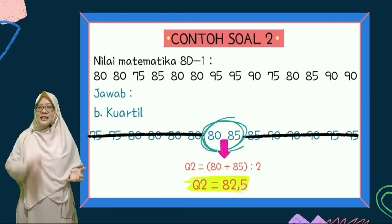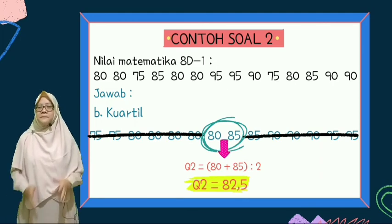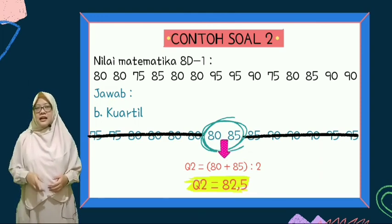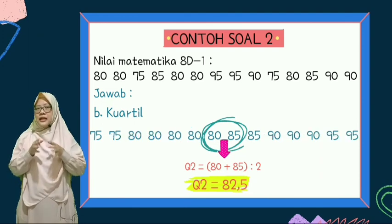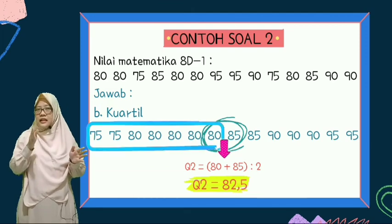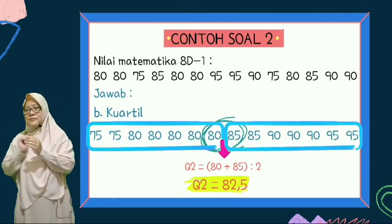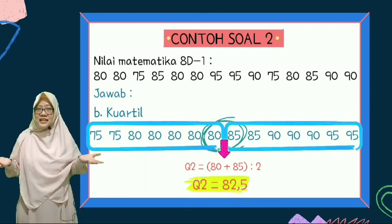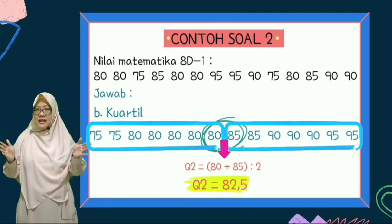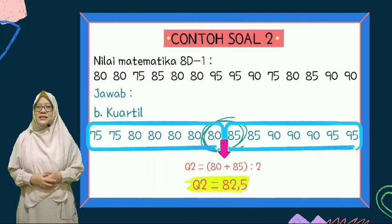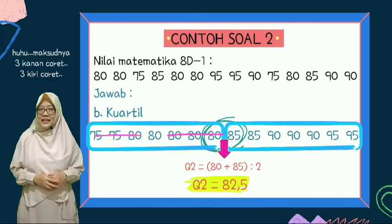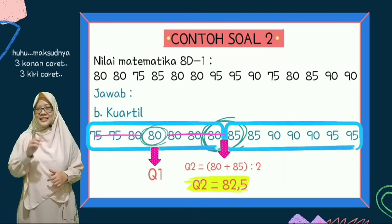Sampai sini paham? Lanjut lagi. Q2 sudah ketemu, kita cari Q1. Karena 82,5 ini letaknya ada di tengah-tengah, maka nilai 80 yang tadi sudah kita bulatin di tengah itu menjadi bagian dari data sebelah kiri, dan nilai 85 itu juga menjadi bagian data sebelah kanan. Kalau di ganjil tadi kita tidak mengambil nilai tengah yang sudah jadi median. Kalau yang ini tetap menjadi bagian kanan dan bagian kiri. Maka sama-sama kita coret: 4 kanan coret, 4 kiri coret. Ketemu Q1-nya adalah 80.